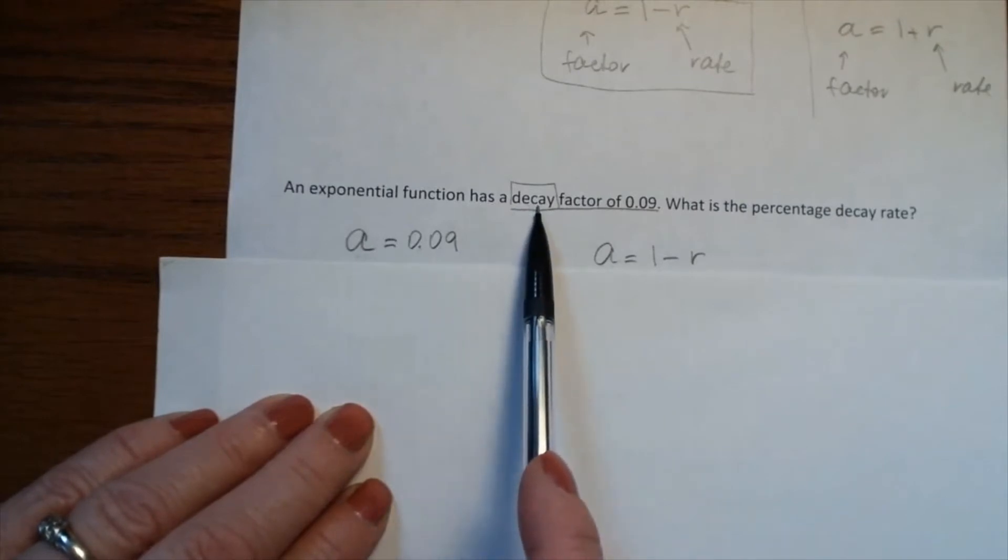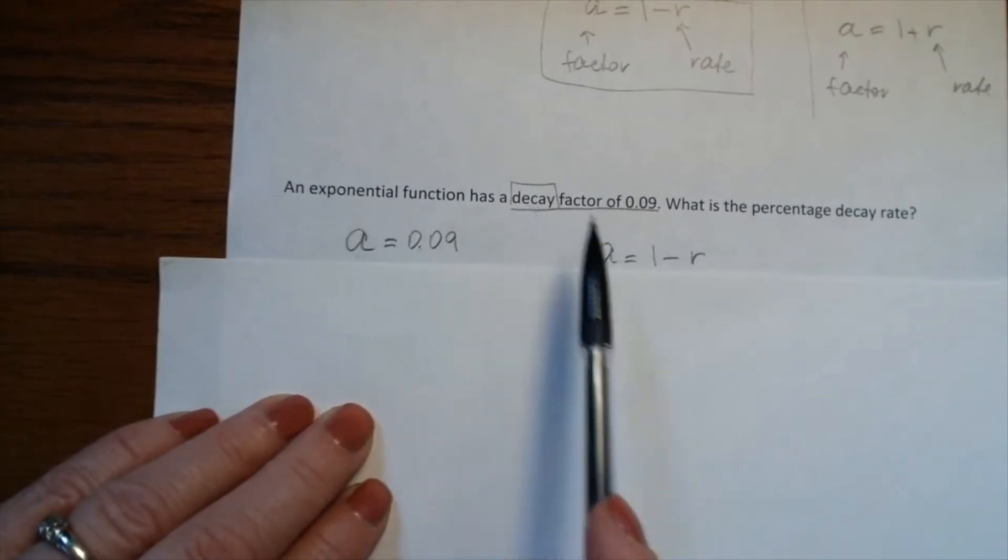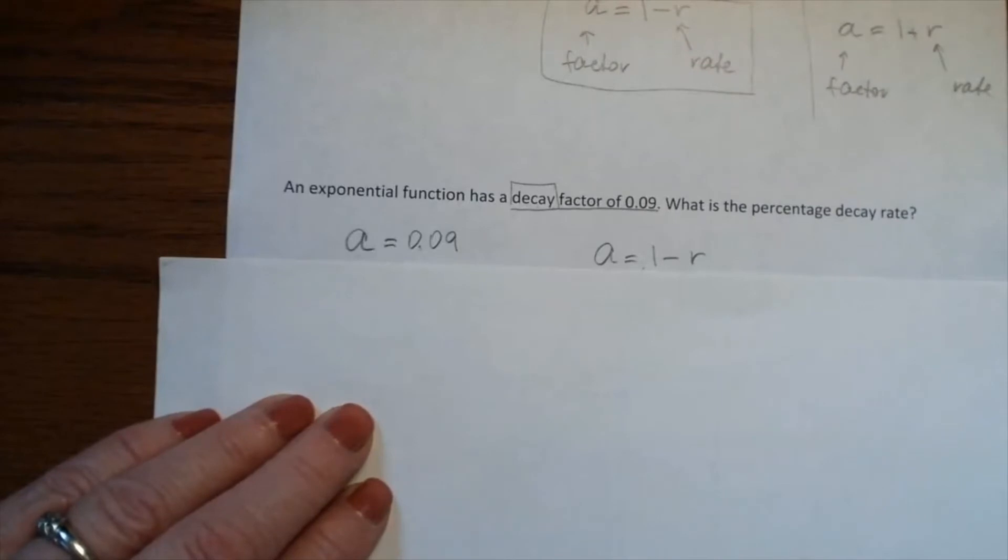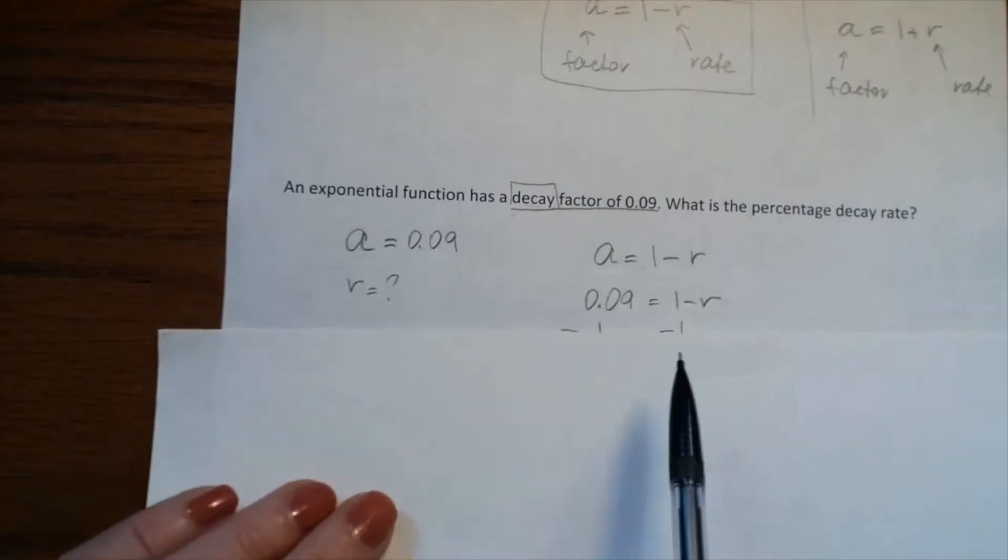Because we have a decay factor, we use the formula a = 1 - r. We substitute 0.09 into this formula for a.